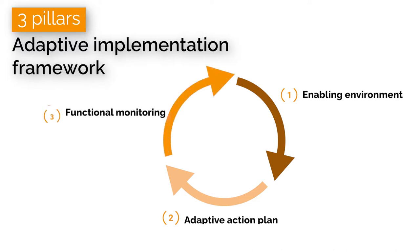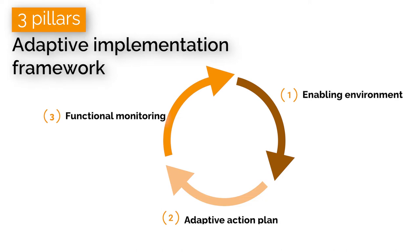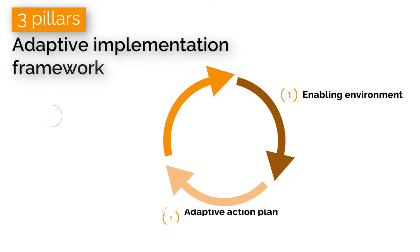The third pillar is functional monitoring and evaluation processes, which are at the core of adaptive disaster risk management. It helps promote experimentation, learning, and continuous adaptation with evolving uncertainties and surprises that are common in the case of compound and cascading disasters. Let's further discuss these three pillars of the adaptive implementation framework.